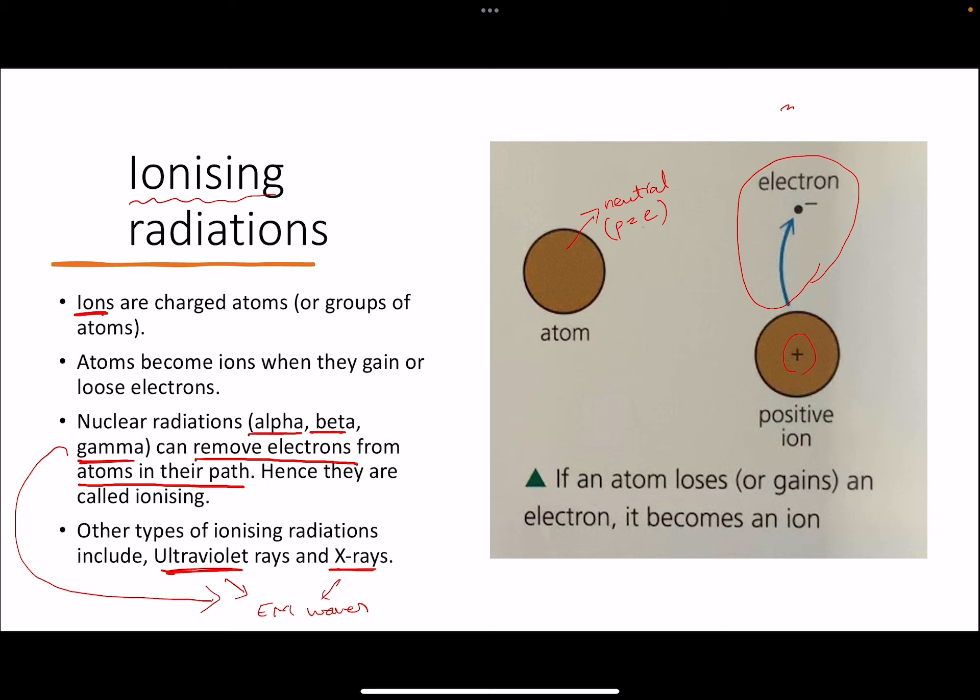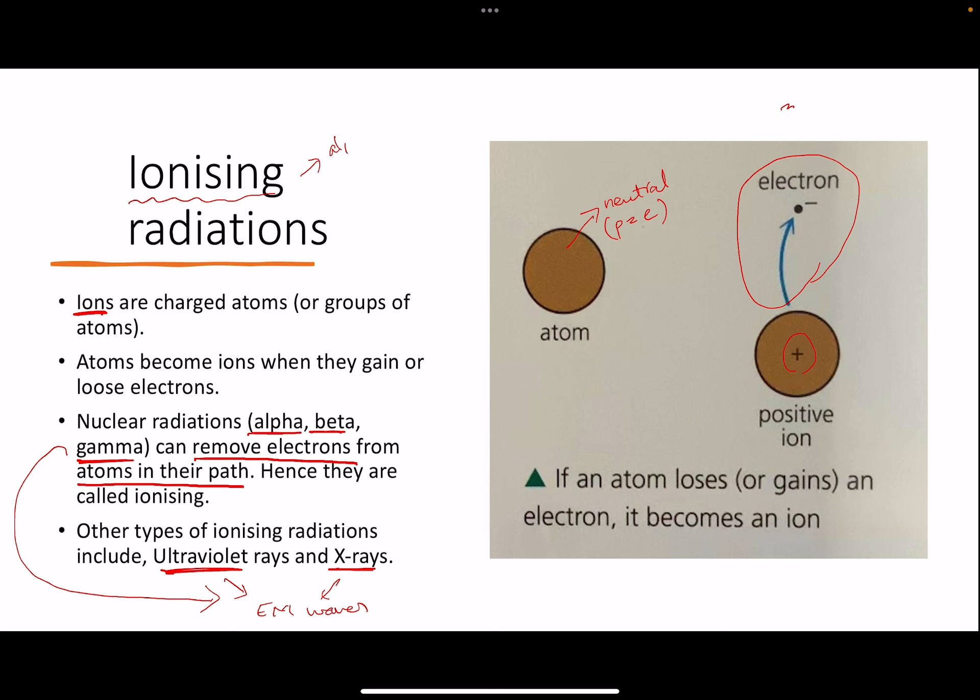So in total you have five ionizing radiations: you have alpha, you have beta, you have gamma. These are all nuclear radiations—they come out of the radioactive nuclei. But you also have UV rays and you have x-rays, and they are not nuclear radiations and we will not be covering them in this topic.